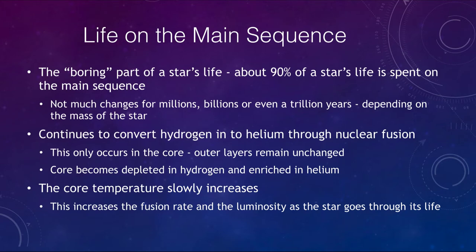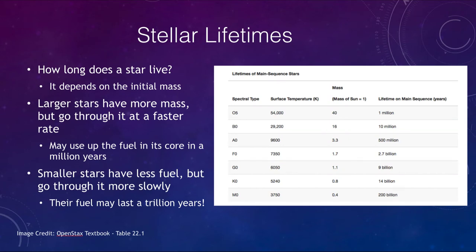Let's look at some of the lifetimes of the stars. How long does a star live? Well, it depends on one thing, and it really depends on the initial mass of the star, how much material it was formed with. A larger star has more mass, more fuel, but it goes through it at a much faster rate. That means that it will use up the fuel in its core in maybe only a few million years. Smaller stars have less fuel, but they go through it far more slowly. And their fuel may last a trillion years.